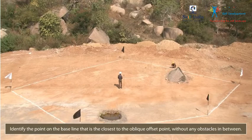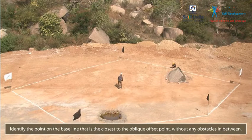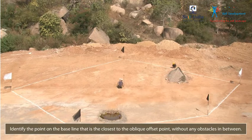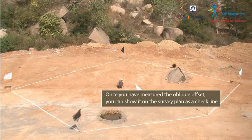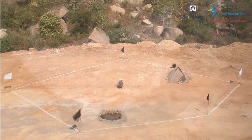In order to take an oblique offset from the baseline, identify the point on the baseline that is the closest to the oblique offset point without any obstacles in between. Once you have measured the oblique offset, you can show it on the survey plan as a checkline.